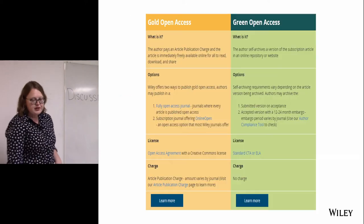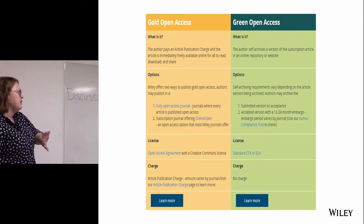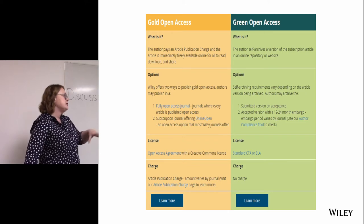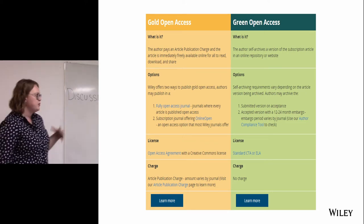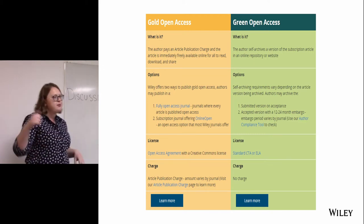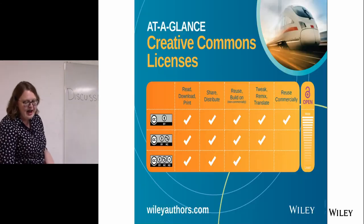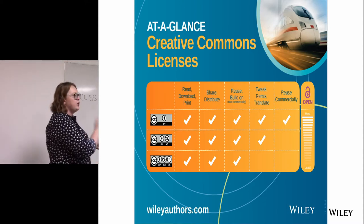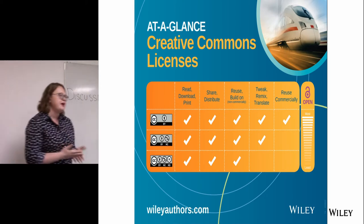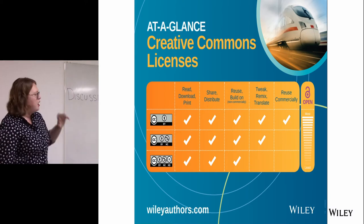On gold and green: green is basically when content is embargoed for a period of time — six months to two years depending on the subject — and then you can do what you want with it afterwards. Gold is when you pay upfront and it goes free immediately. There are also other models like bronze, platinum, and diamond. The main licences are CC BY, which is most common, then non-commercial and non-distribution variants.